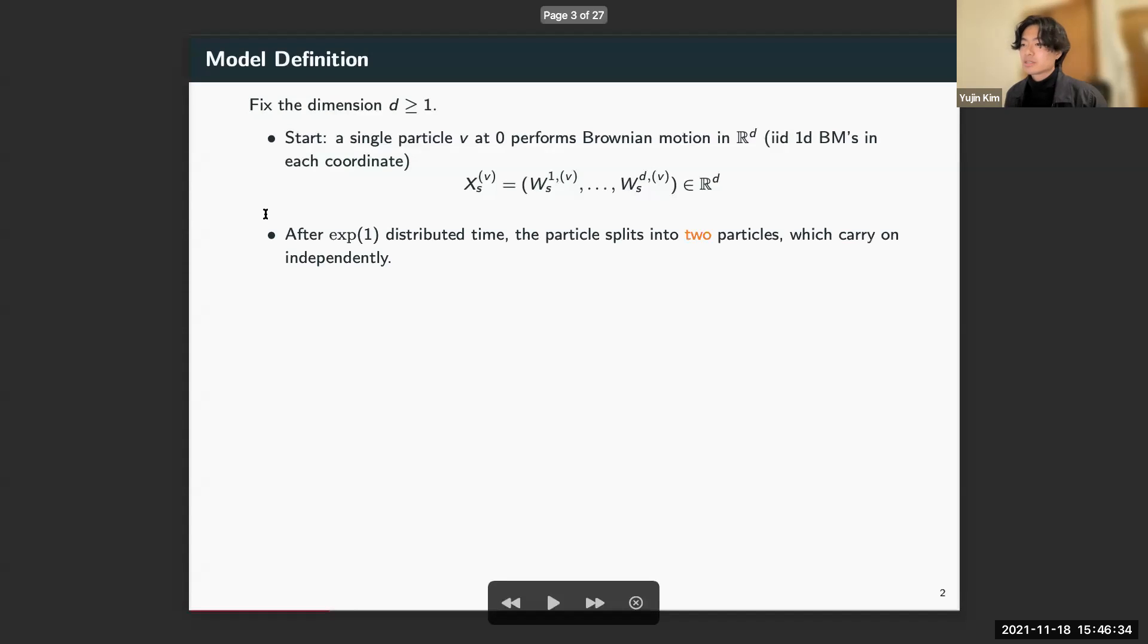At the time it rings, the particle splits into two particles which then move around according to independent Brownian motions in R^d. After they split, they also carry exponential alarm clocks and the process repeats.